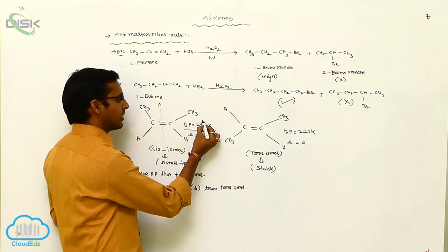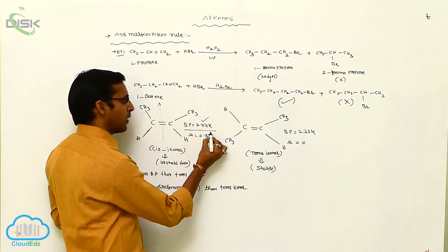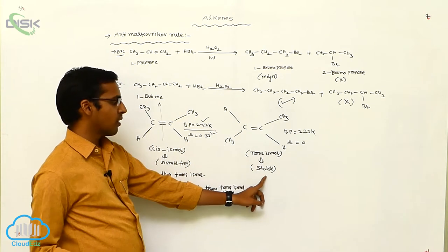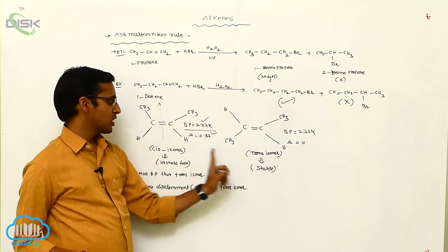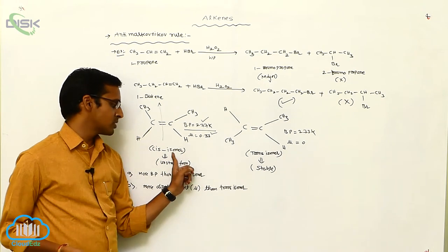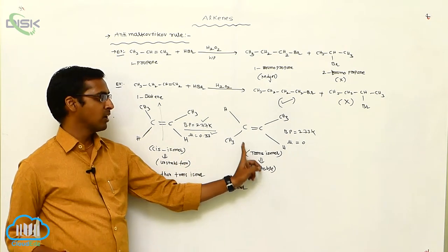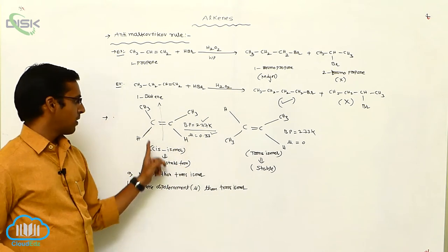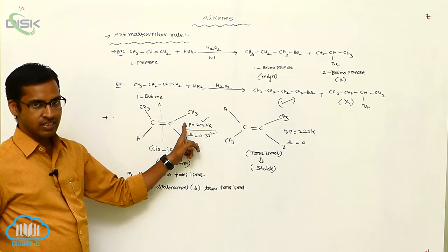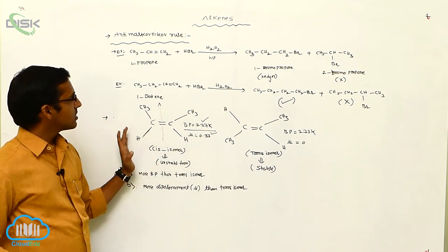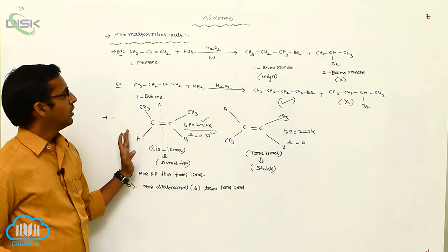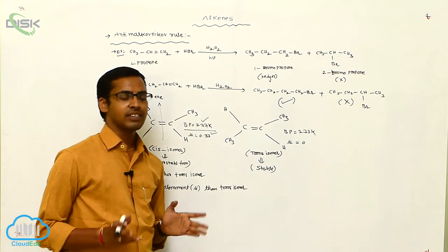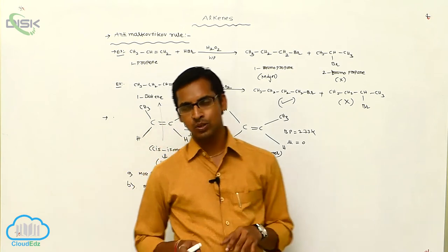The cis isomer has more boiling point and more dipole moment compared to the trans form. But the trans form is more stable compared to the cis form, because the trans form has no repulsions, while the cis form has more repulsions. Due to these repulsions, the cis form is unstable. Based on this, we can identify cis and trans isomers.